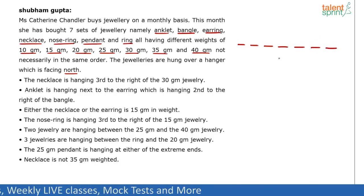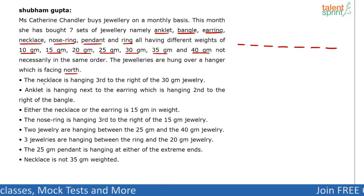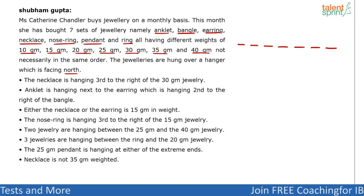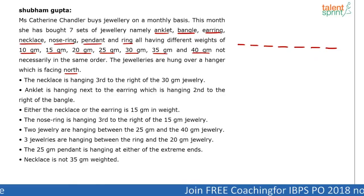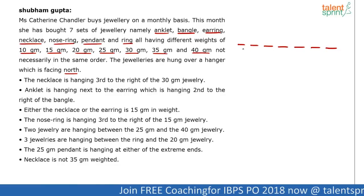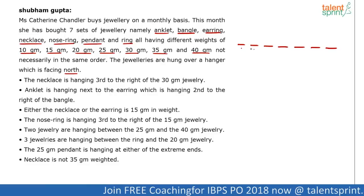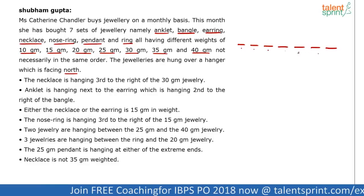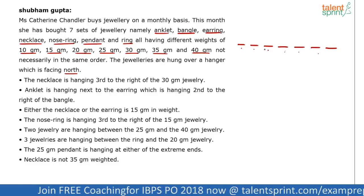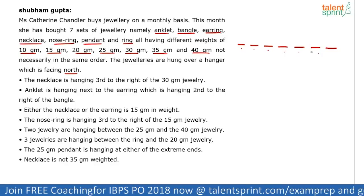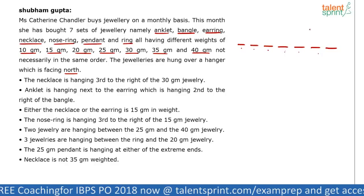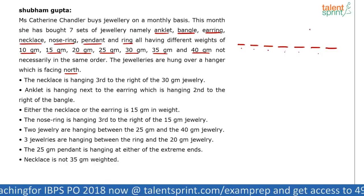Before you start putting items on the linear arrangement directly, you should represent all these clues into pictorial formats — do a pictorial representation of the points given and then try to fit them accordingly. In linear arrangement it is very important to know the exact position: first, second, third, fourth, fifth, sixth, seventh. Only when you know that a particular item is in the fourth position can you place it there. You cannot start from wherever you want, unlike in a circular arrangement.